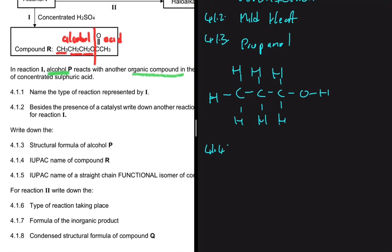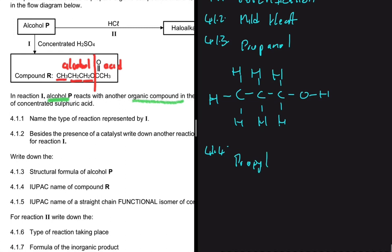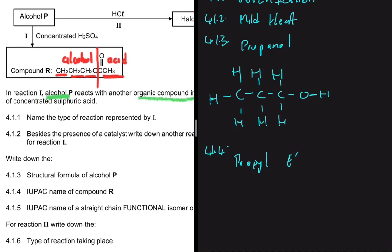For 4.1.4, write down the IUPAC name of compound R. We've established that compound R is an ester. The first part of the name comes from the alcohol and the second part from the acid. Since the alcohol is propanol, the name starts with propyl. The acid has two carbons, so the name is propyl ethanoate. If the acid had three carbons it would be propyl propanoate, and if the alcohol had four carbons it would be butyl ethanoate.